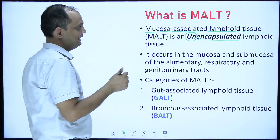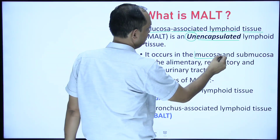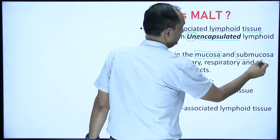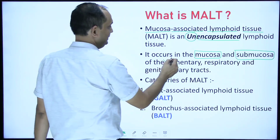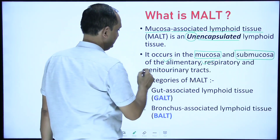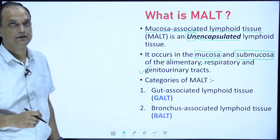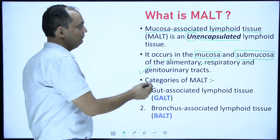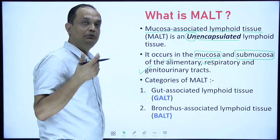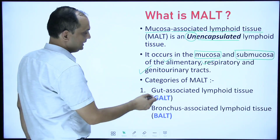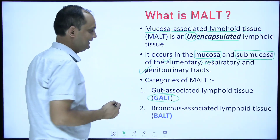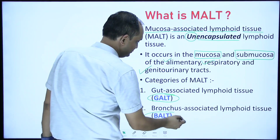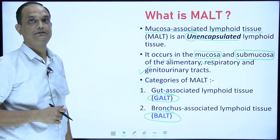These Mucosa Associated Lymphoid Tissues are present in the mucosa - that is sub-epithelial or in the sub-mucosa of alimentary tract, respiratory tract and genitourinary tract. They are classified as GALT, that is gut associated, when talking about the alimentary tract, and bronchus associated when talking about the respiratory system.